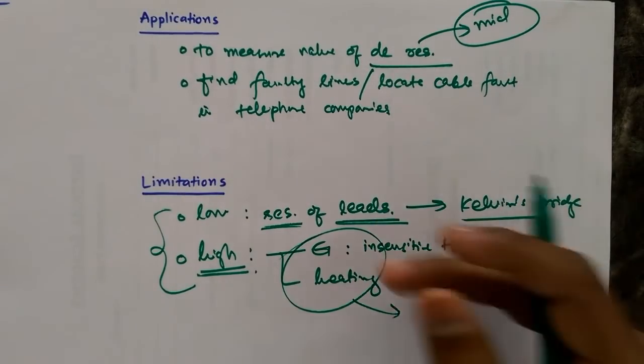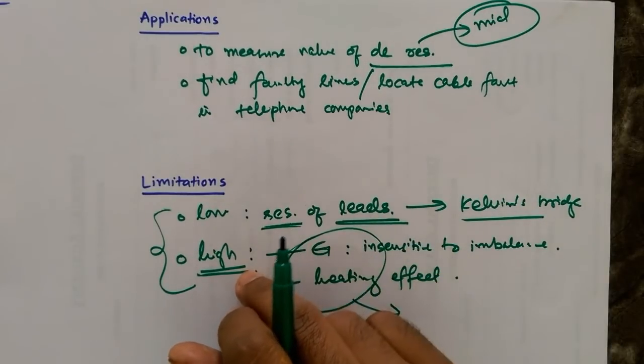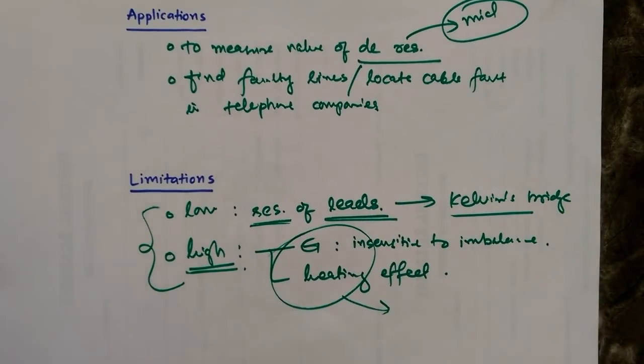And because of low resistance we'll get another faulty result because of resistance of leads. So these are the couple of applications and a couple of limitations of Wheatstone bridges.